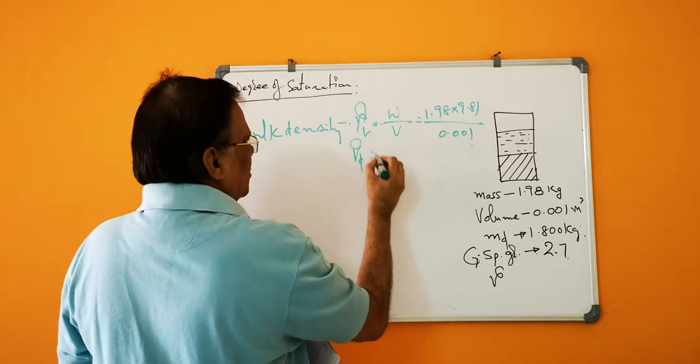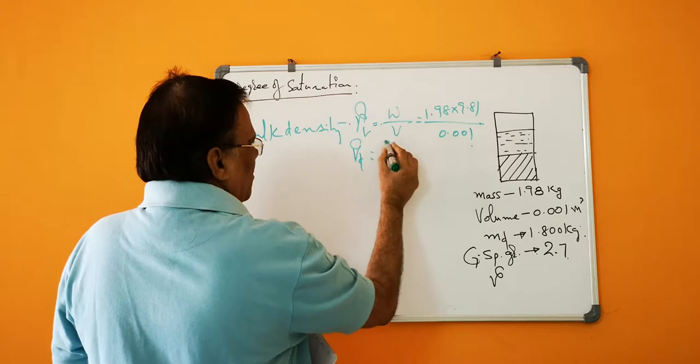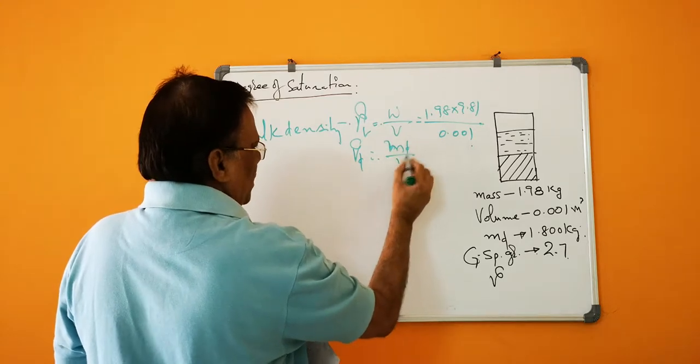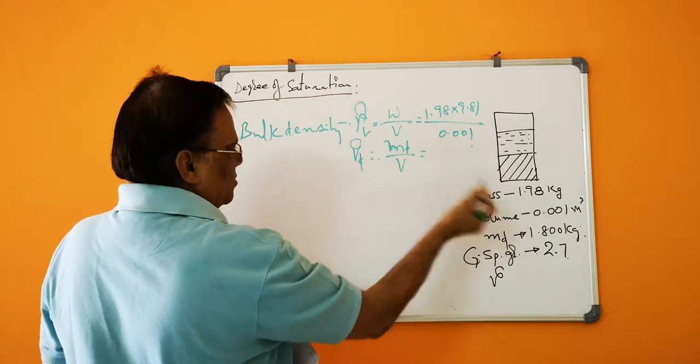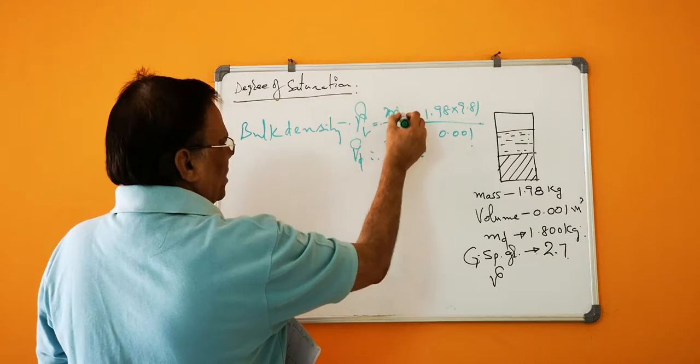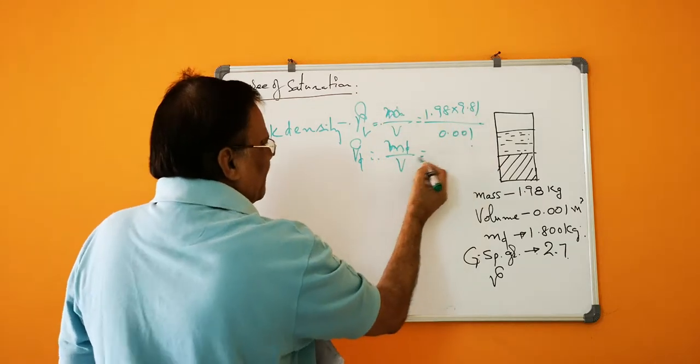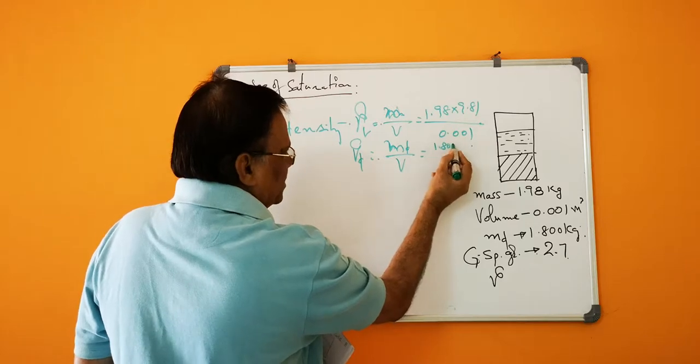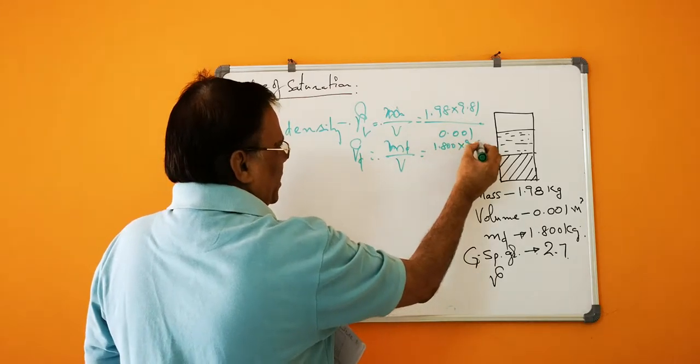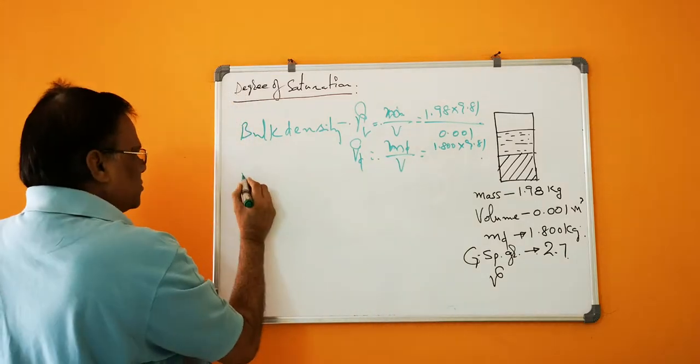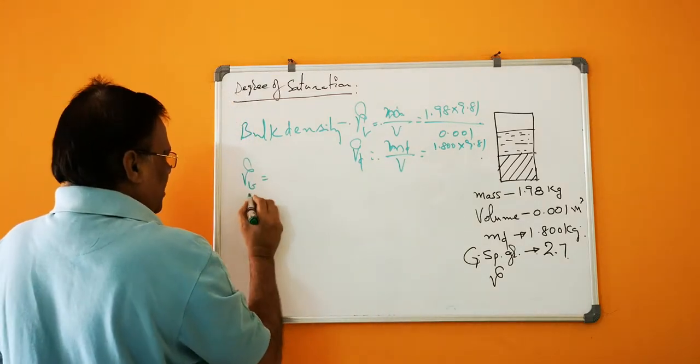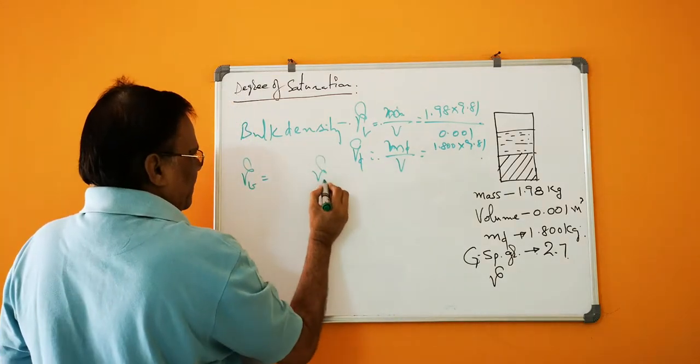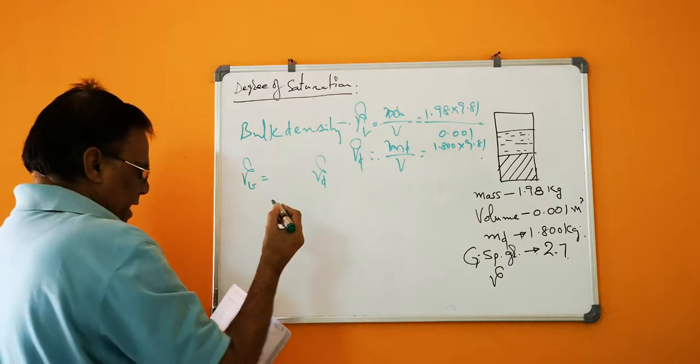Gamma dry is also equal to mass d by volume. This is also mass, so this is also 1.800 into 9.81. These two, gamma bulk and gamma dry, is coming as 17.658 and this is 19.42.